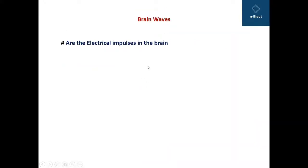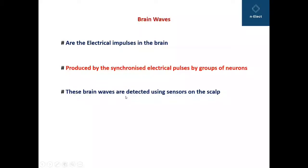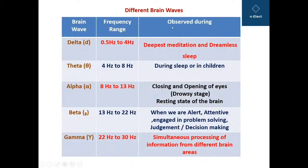As far as brain waves are concerned, they are basically electrical impulses in the brain occurring due to synchronized electrical pulses from groups of neurons. These brain waves are detected using sensors, that is electrodes, on the scalp. Depending upon the frequency ranges and the state of the brain in which the waves exist, brain waves are classified as shown in the table.